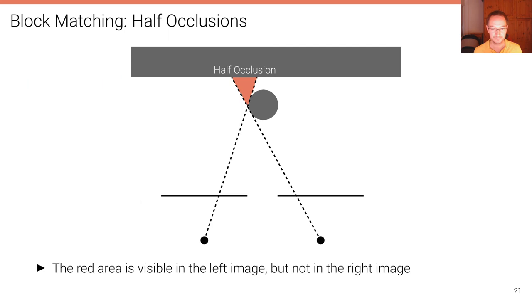The half-occlusion problem arises when an object in front occludes another object. In that red region, only the left camera can see it but the right camera cannot, so no correspondence can be estimated there.